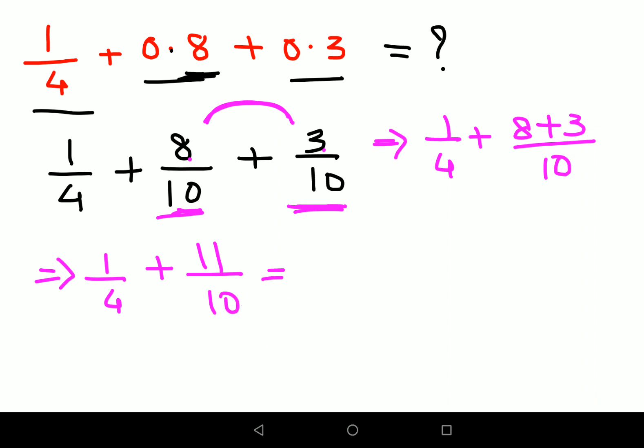So here you will get 1 upon 4 plus 8 plus 3 is 11 upon 10. Now what you can do is you can take LCM. Now for those who think finding LCM is like a task or something like that, I'm going to give you an easier way out from this as well.